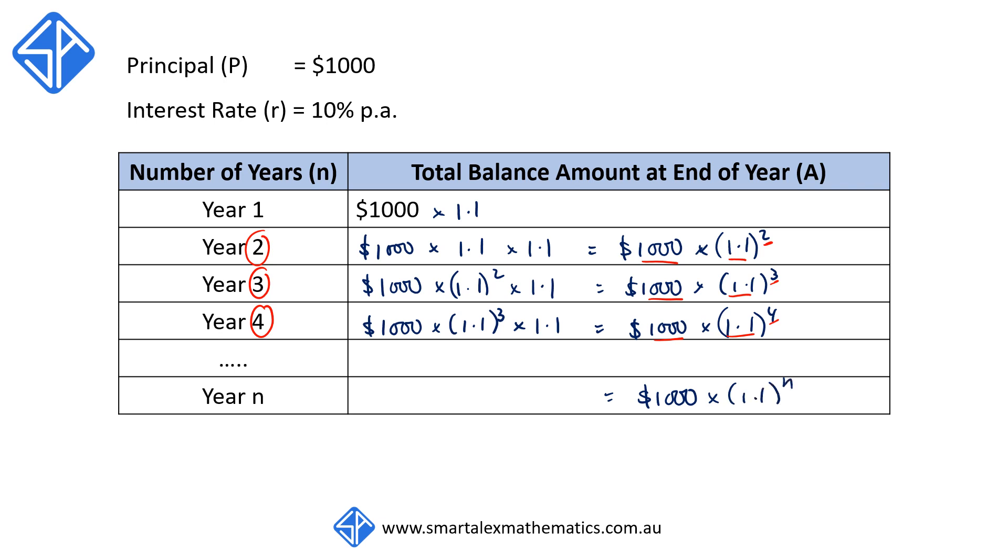So if we now go back and replace the $1,000 with the variable P, the 1.1 with 1 plus R, and n is the number of periods, we now have the general formula for the compound interest, which is A equals P times 1 plus R to the n.